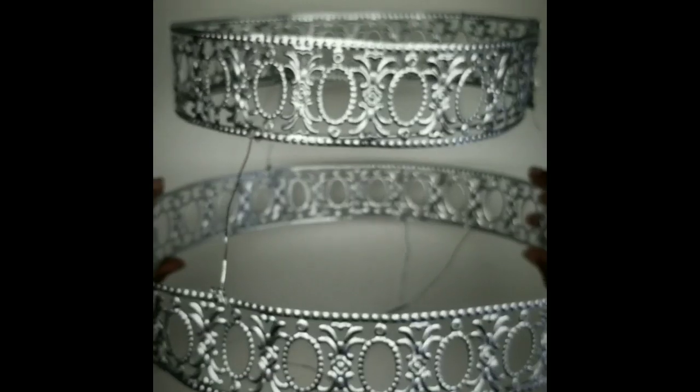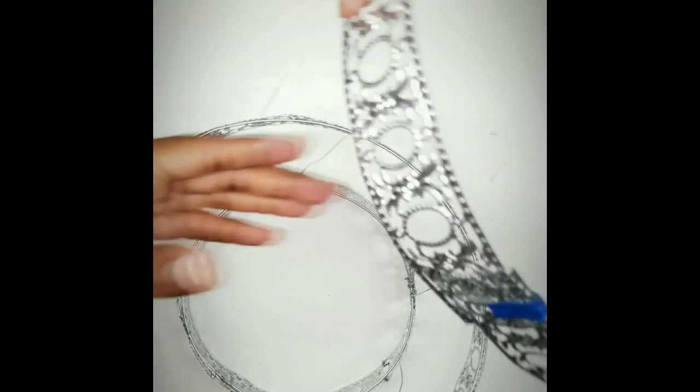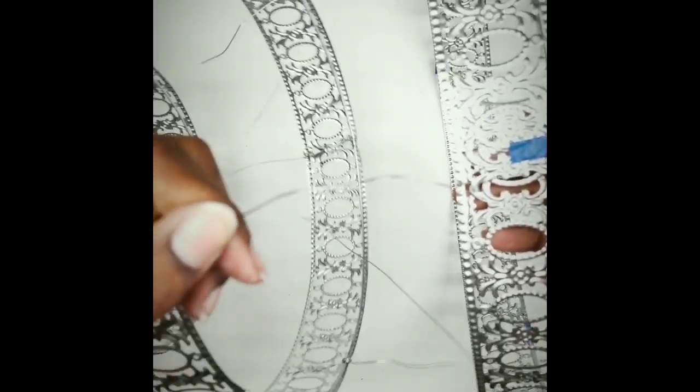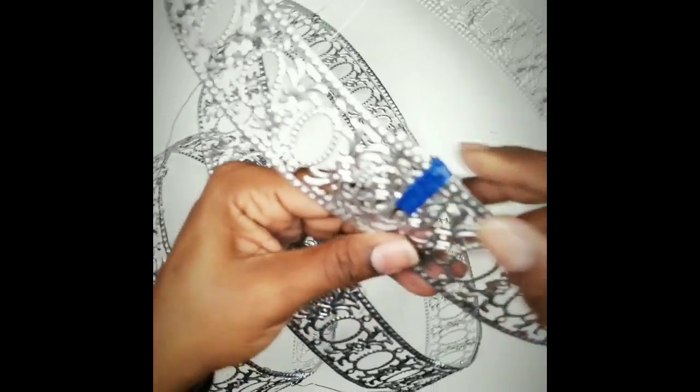The wire is very pliable, so if you need to adjust a little left, a little right, it's very forgiving. Now we're going to take that assembled two-tier and attach it to the bottom of the large frame.